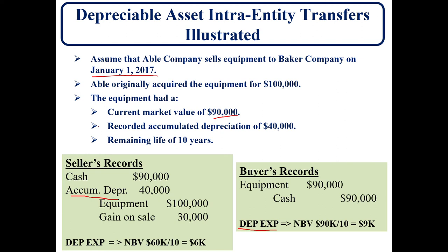Able is the seller. When they sell the equipment, they would debit cash for $90,000, debit the accumulated depreciation, credit equipment, and as a result recognize a gain on sale of $30,000. The buyer will record the equipment at $90,000 and credit cash. Since the remaining life is 10 years, the seller would have had $6,000 of annual depreciation expense, while the buyer has a different basis, so their depreciation is slightly higher.